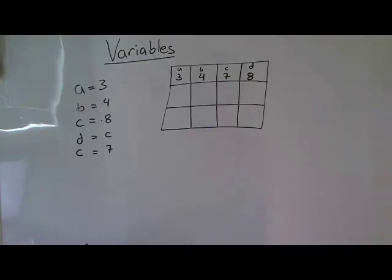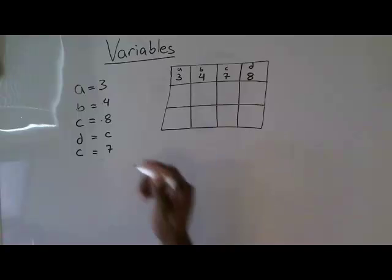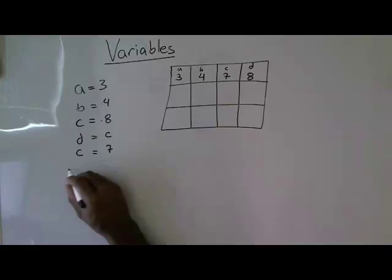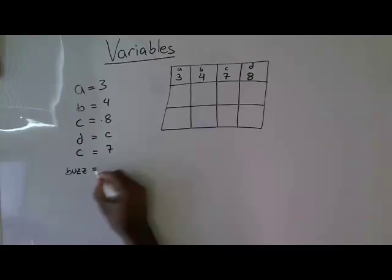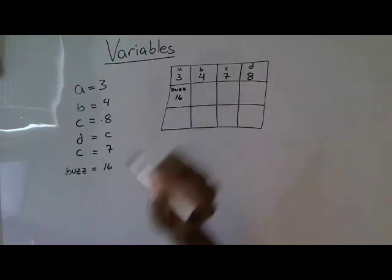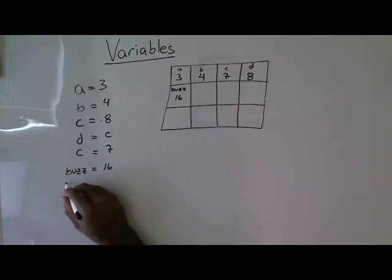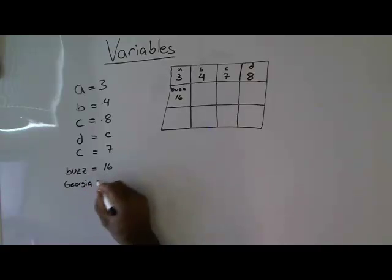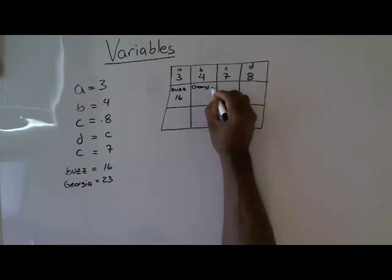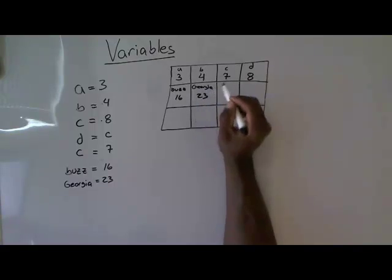Now, let's talk about naming variables and what are valid variable names. You can name a variable pretty much anything you want to. Sticking with our Georgia Tech theme, I can name it Buzz, and Buzz can get the value 16. So now there's memory location Buzz, and it has the value 16. I can do a memory location Georgia, and that has the value 23. So a memory location named Georgia has the value 23.